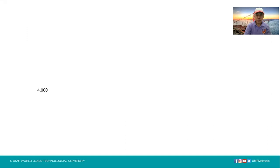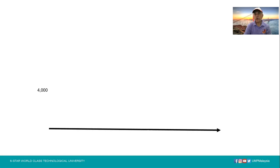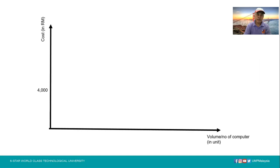For the solution, we first set up the chart axes. The horizontal axis represents volume, or number of computers. The vertical y-axis represents cost in ringgit.